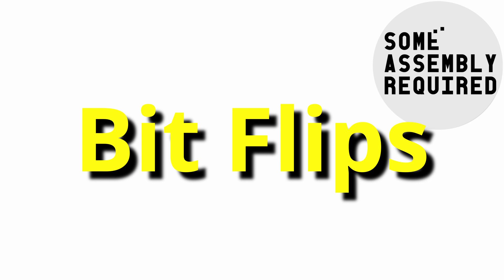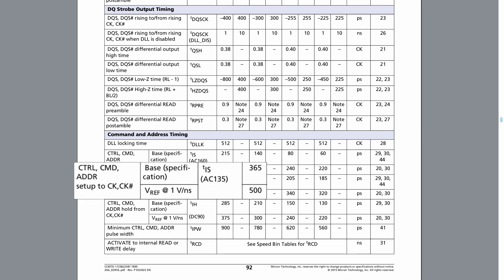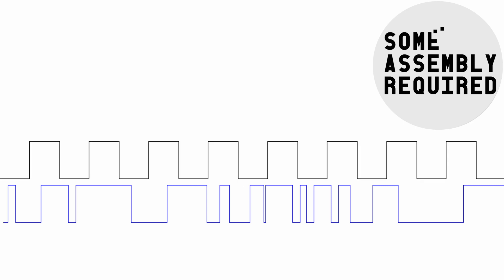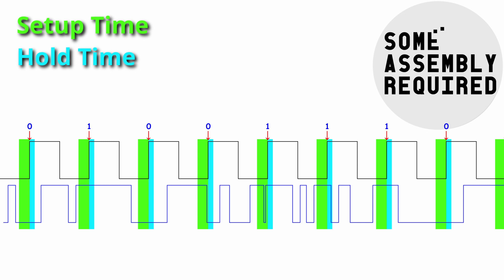How do bit flips happen? When you look at the data sheet for electrical components, you typically see a section called timing or AC characteristics. They specify how someone communicating with the device needs to time the signals for the device to work properly, as well as what behavior one can expect from the device. Two specific parameters of note here are setup time and hold time. When working with synchronous devices we have a clock edge that triggers the operation. No electronics can sample at infinite speed. For the data signal to be sampled correctly, it needs to be stable a certain amount of time before the clock edge arrives and also a certain amount of time after the clock edge has passed. These are the setup time and hold time respectively. If either setup or hold times are not observed — if the data signal changes within setup time before the clock or hold time after — then it's not guaranteed that the correct value will be registered. In other words, we might get a bit flip.